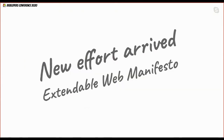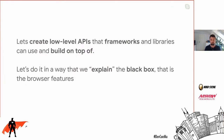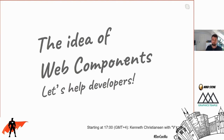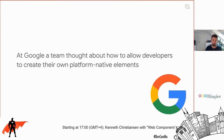New efforts arrived — people came up with the Extensible Web Manifesto, which decided that when working on specs and standards we should look at explaining how the web works in the browser engine, instead of just building on top of it. The idea was to create a low-level API that frameworks and libraries can build on top of, to expose the black box that is the browser. This was the foundational idea of web components.